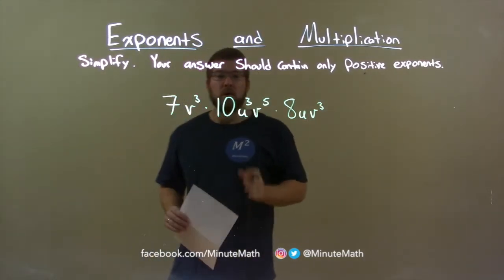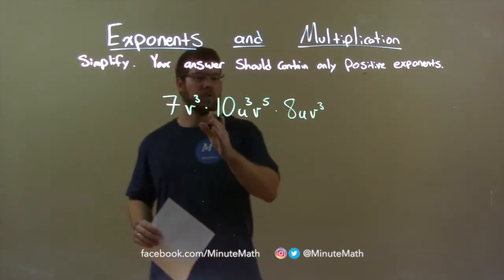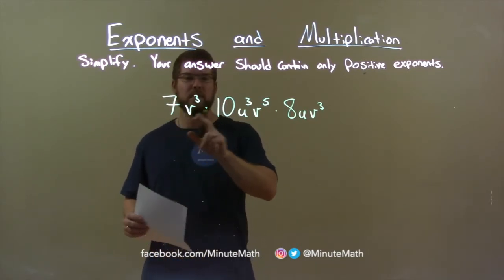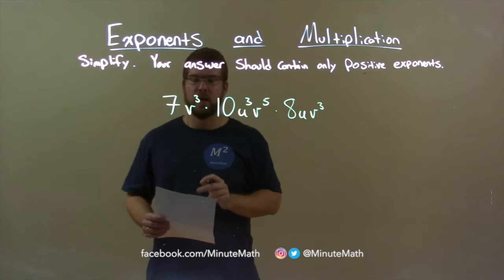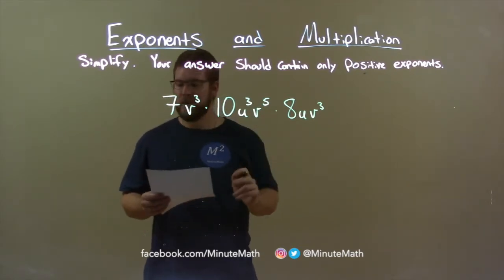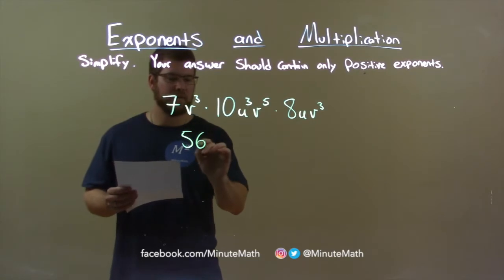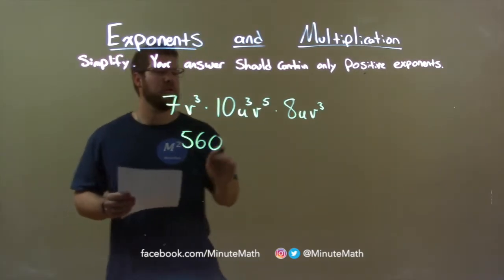Alright. So let's not get scared here. When we multiply all of these out, we need to first look at the coefficients: 7, 10, and 8. Well, 7 times 10 times 8 is 560. So we have 560 here and now we've dealt with our coefficients.